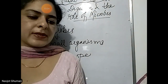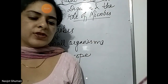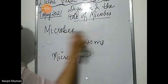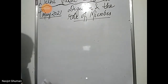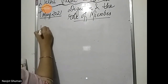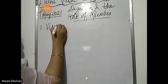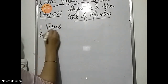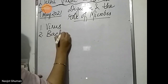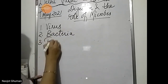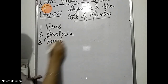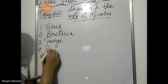Microbes are of four main types: virus, bacteria, fungi, and protozoa. Which are the four main types of microbes? Virus, bacteria, fungi, and protozoa.